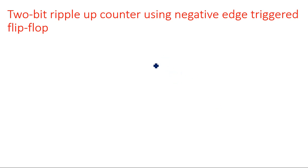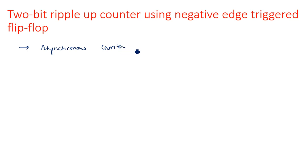Hi everyone. In this video I am going to explain about asynchronous counter. I am going to explain two different types of asynchronous counters: one is 2-bit ripple up counter, another one is 2-bit ripple down counter. Here, ripple is nothing but asynchronous counter, also known as ripple counter. That is why it is given as a ripple up counter and ripple down counter.